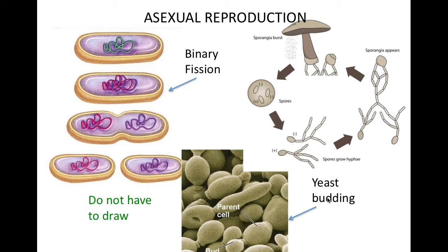Over here we have yeast, which is a microorganism. The way yeast grows is that it grows parts off of its own body, and then they split off and become another organism — but with the same exact genetic material as the original parent.